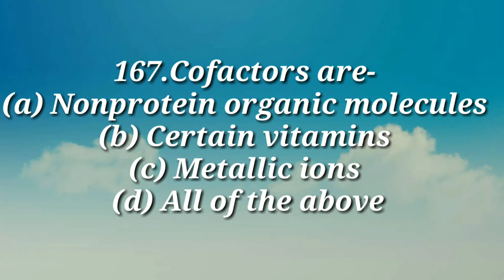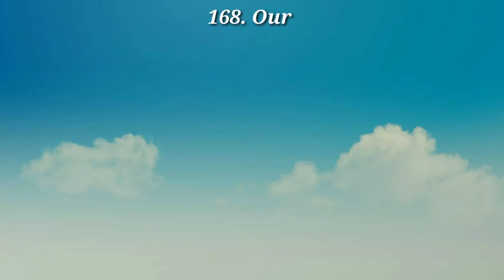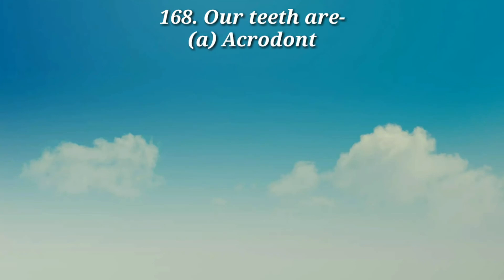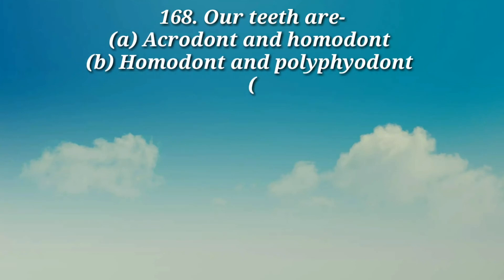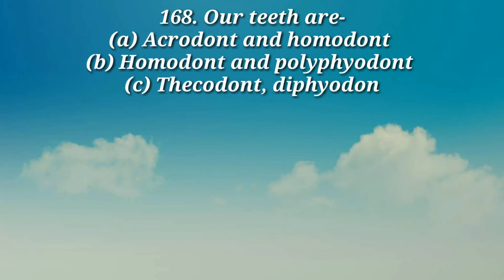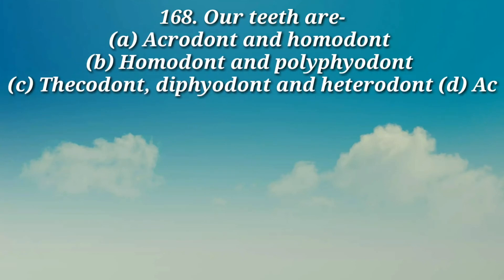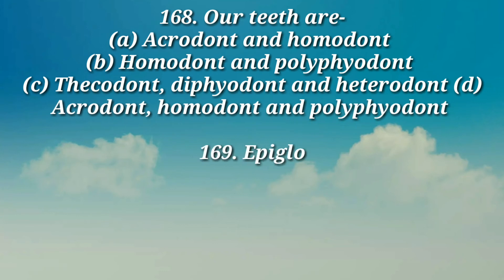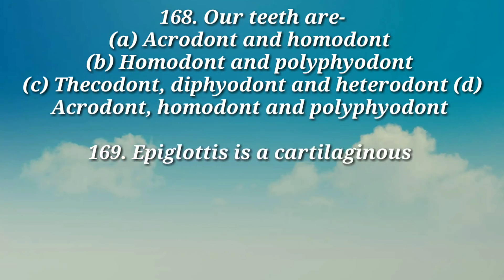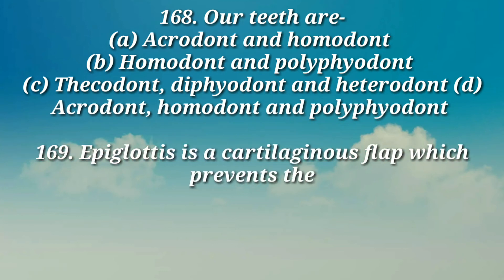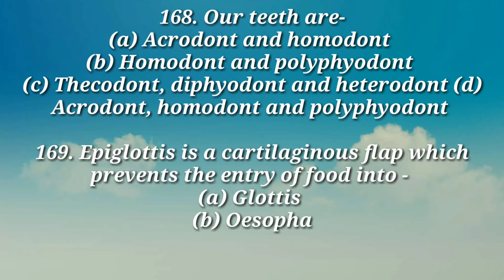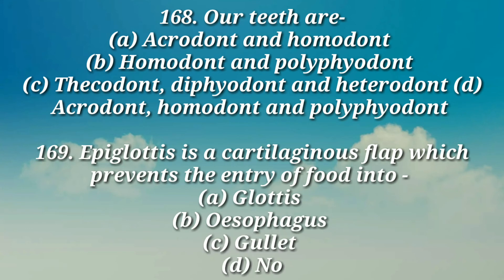Cofactors are — c) metallic ions, d) all of the above. Question number 168: Rabbit teeth are — a) acrodent and homodent, b) homodent and polyphyodont, c) thecodont, diphyodont and heterodont, d) acrodent, homodent and polyphyodont.